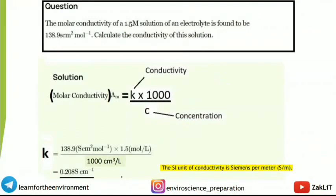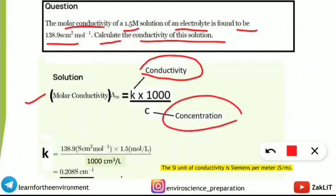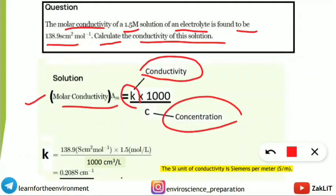Next, the third concept is a numerical problem. The question: the molar conductivity of a 1.5 molar solution of an electrolyte is found to be 138.9 S·cm² mol⁻¹. Calculate the conductivity of the solution. For this, you need only one formula: molar conductivity λm = (κ × 1000) / c, where κ is the conductivity and c is the concentration. Here, molar conductivity and concentration are given; we have to find κ.